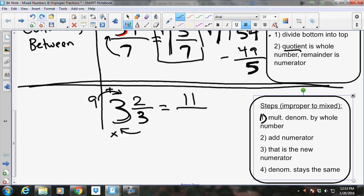That is your new numerator. And then the denominator stays the same. It stays as a three. And that's written over here. Multiply the denominator by the whole number. Add the numerator. And that is your new numerator. And then the denominator stays the same.